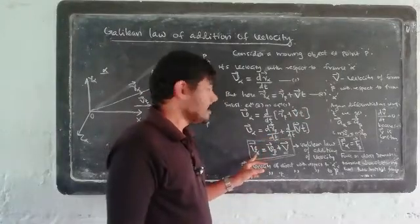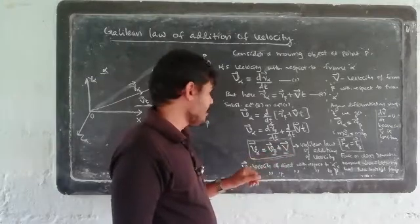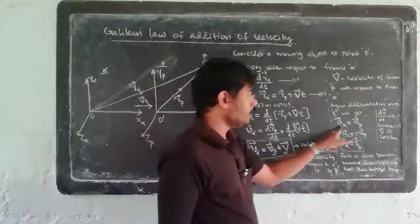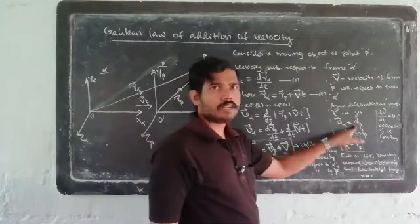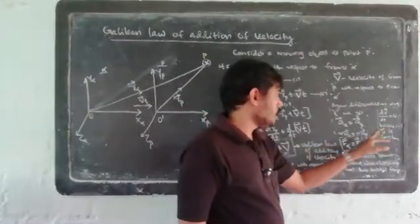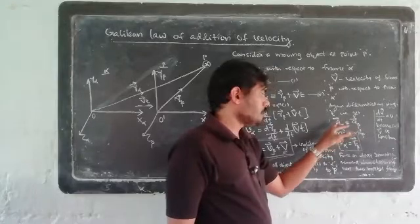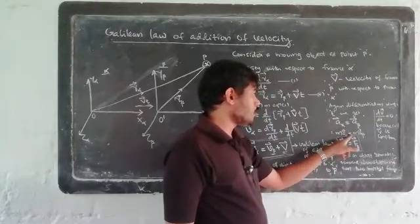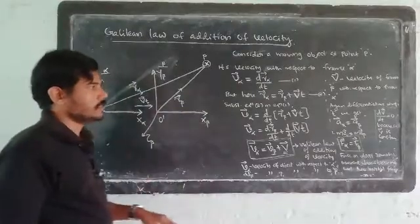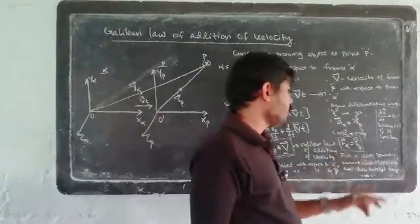Differentiating the Galilean law of addition of velocity with respect to time: d(V-alpha)/dt equals d(V-beta)/dt plus d(V)/dt. Since V is constant, d(V)/dt equals zero, so the acceleration a-alpha equals a-beta. Multiplying both sides by the mass M of the object, M times a-alpha equals M times a-beta. So F-alpha, the force on the object with respect to frame alpha, equals F-beta, the force with respect to frame beta.